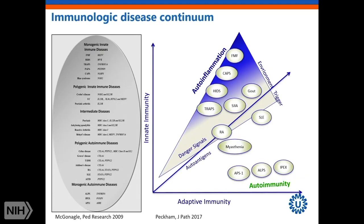I like this figure that was first proposed — the concept of a disease continuum — by Dennis McGonagle almost 10 years ago, and it was refined by the same group to show that systemic JIA is really a prototypical auto-inflammatory disease in the spectrum of other auto-inflammatory diseases, while not being a monogenic disease.